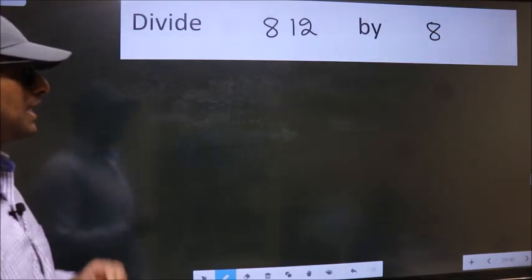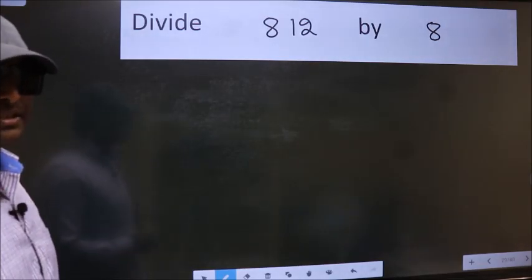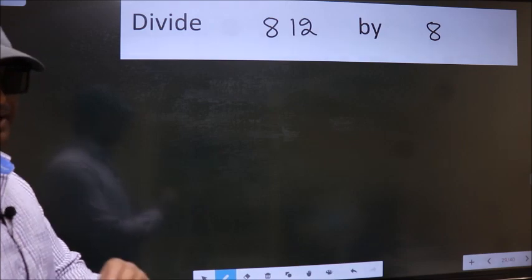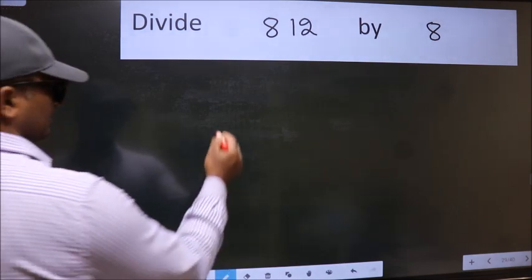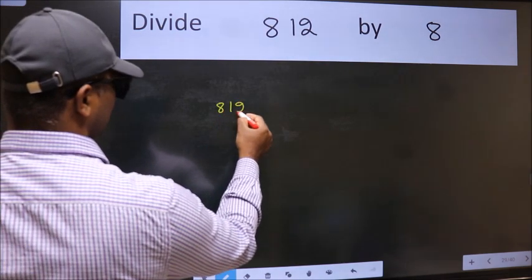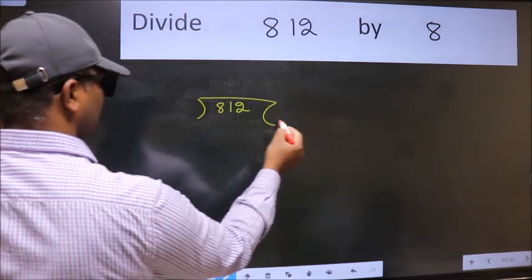Divide 812 by 8. To do this division, we should frame it in this way. 812 here, 8 here.